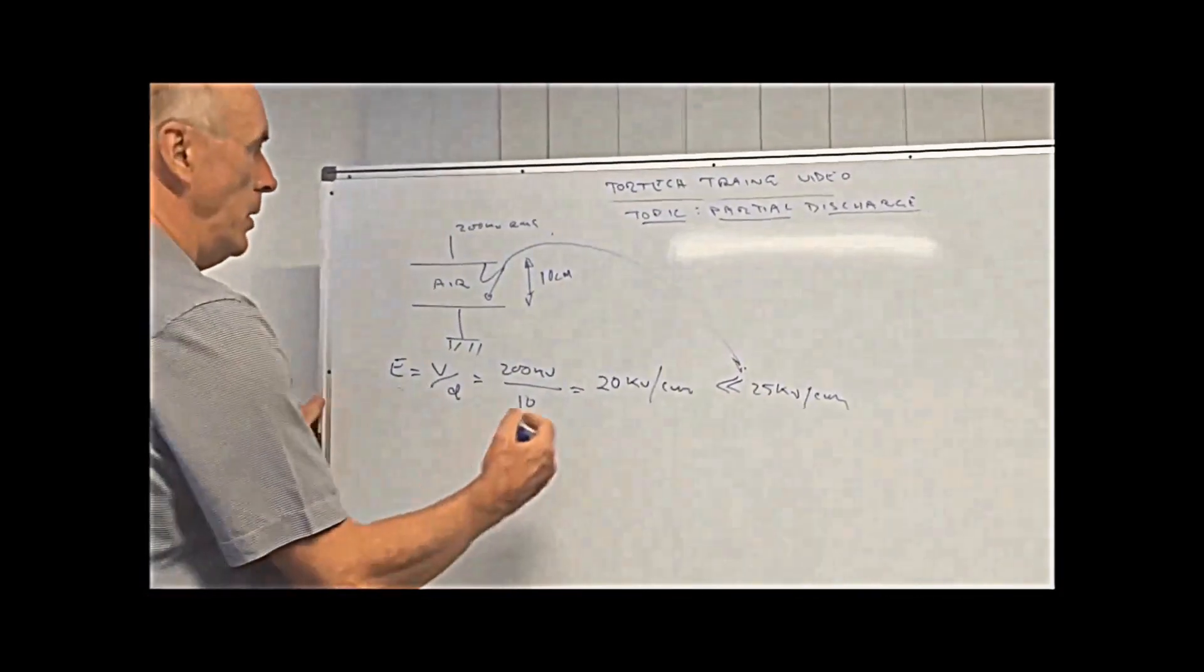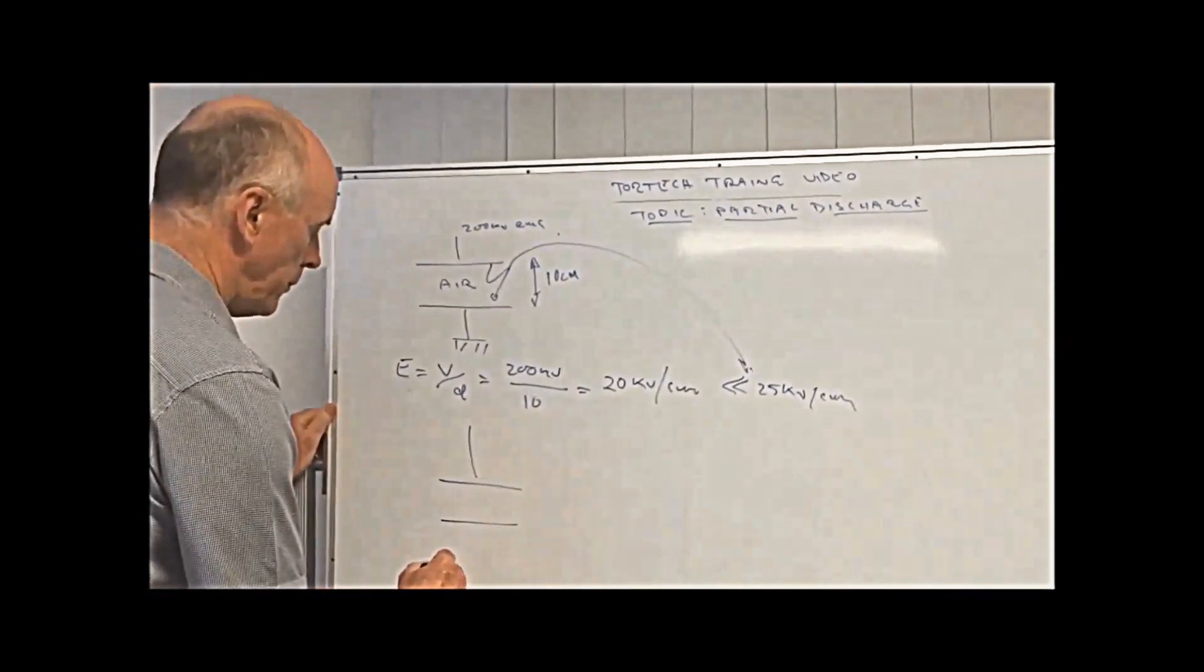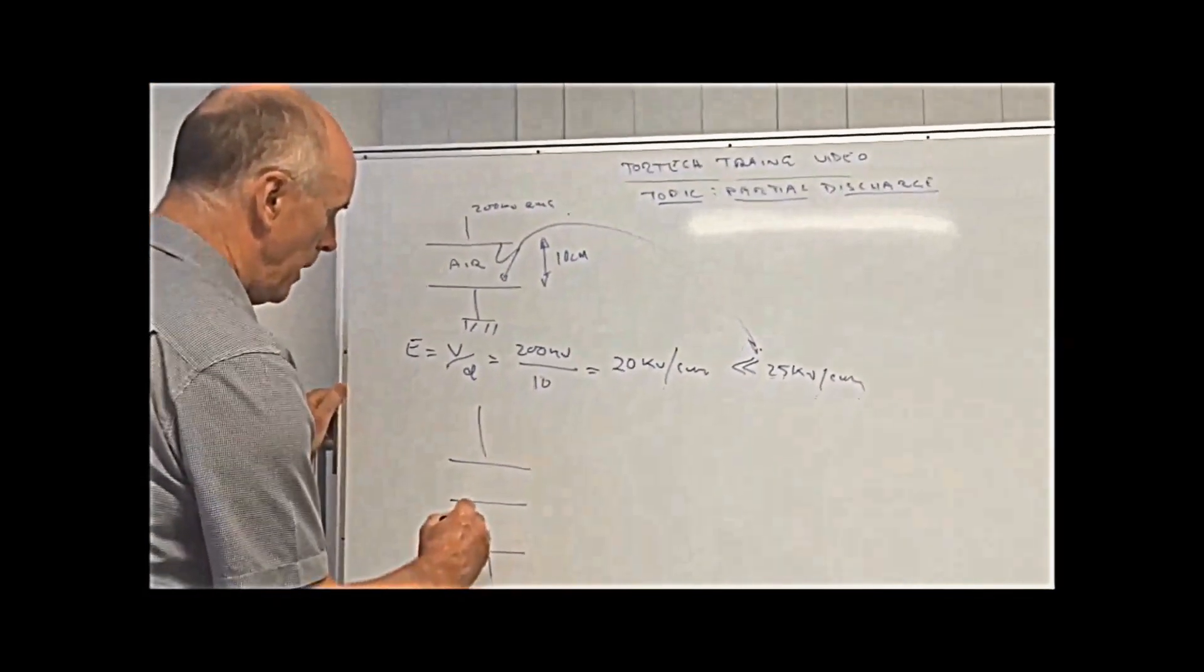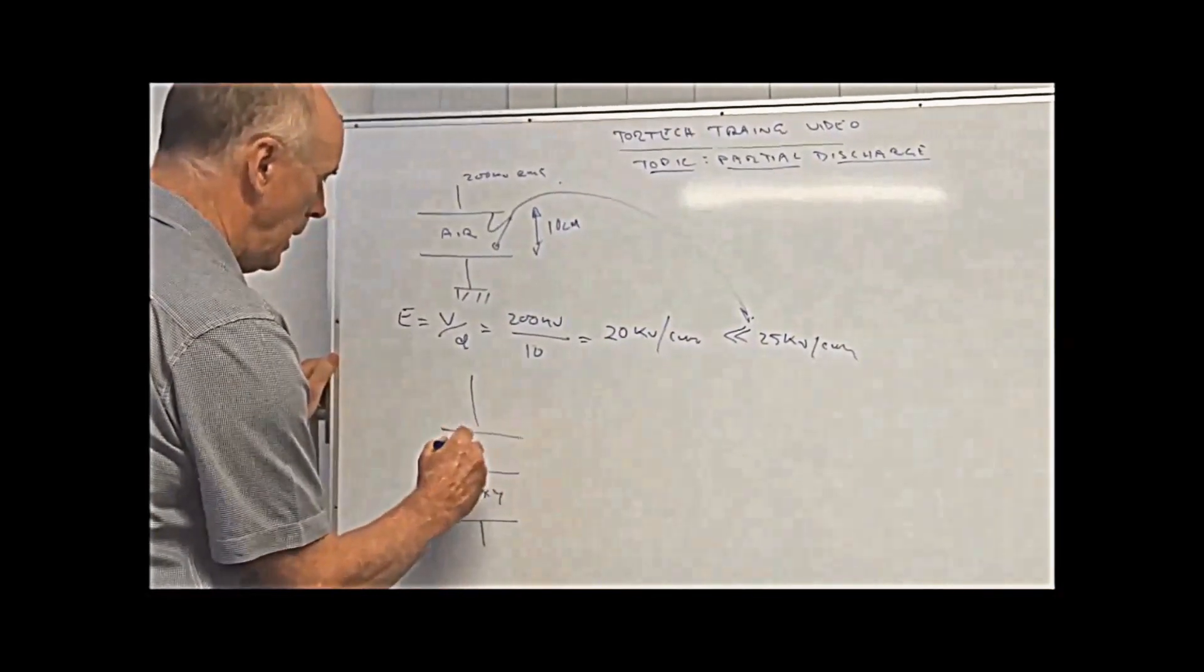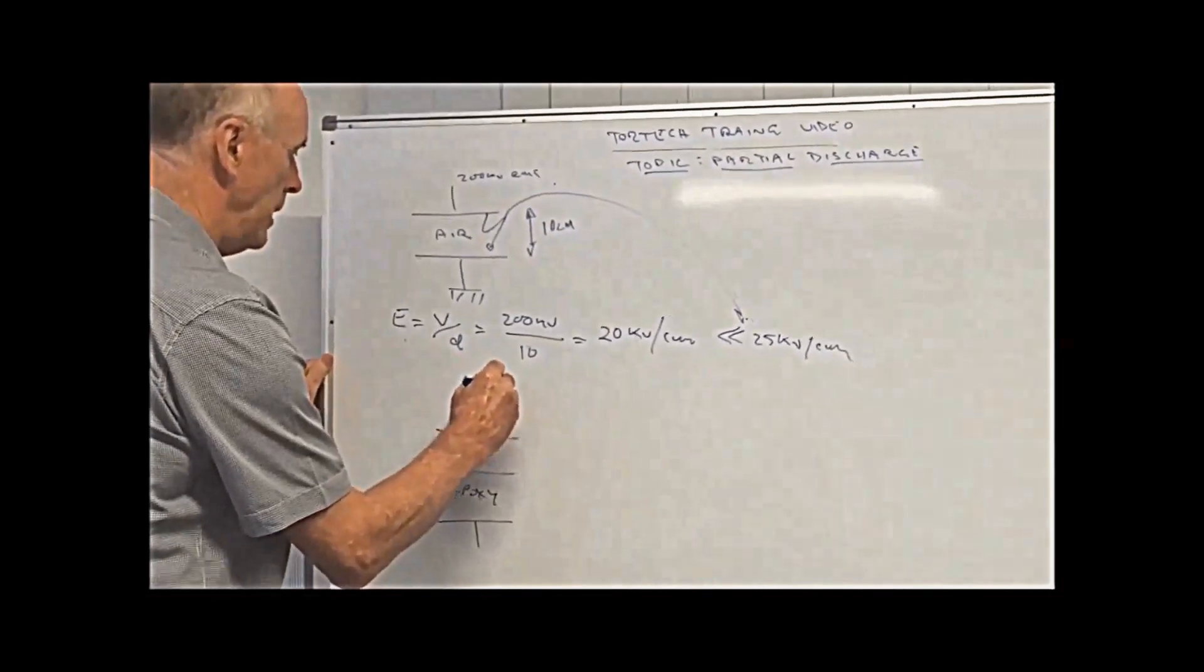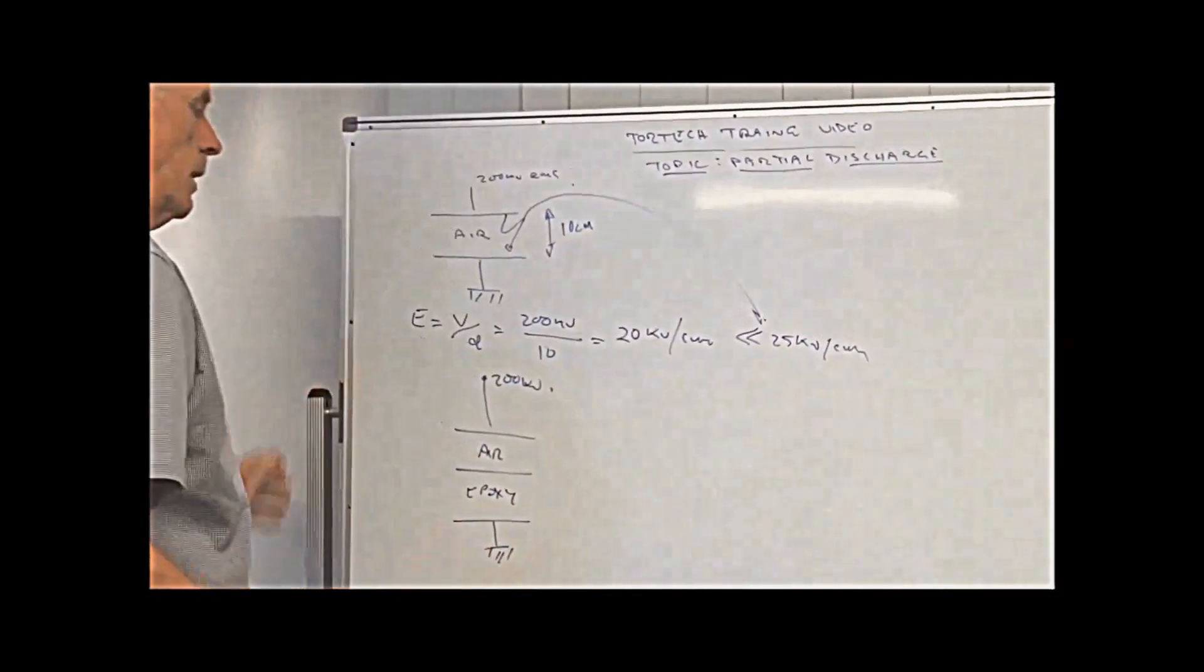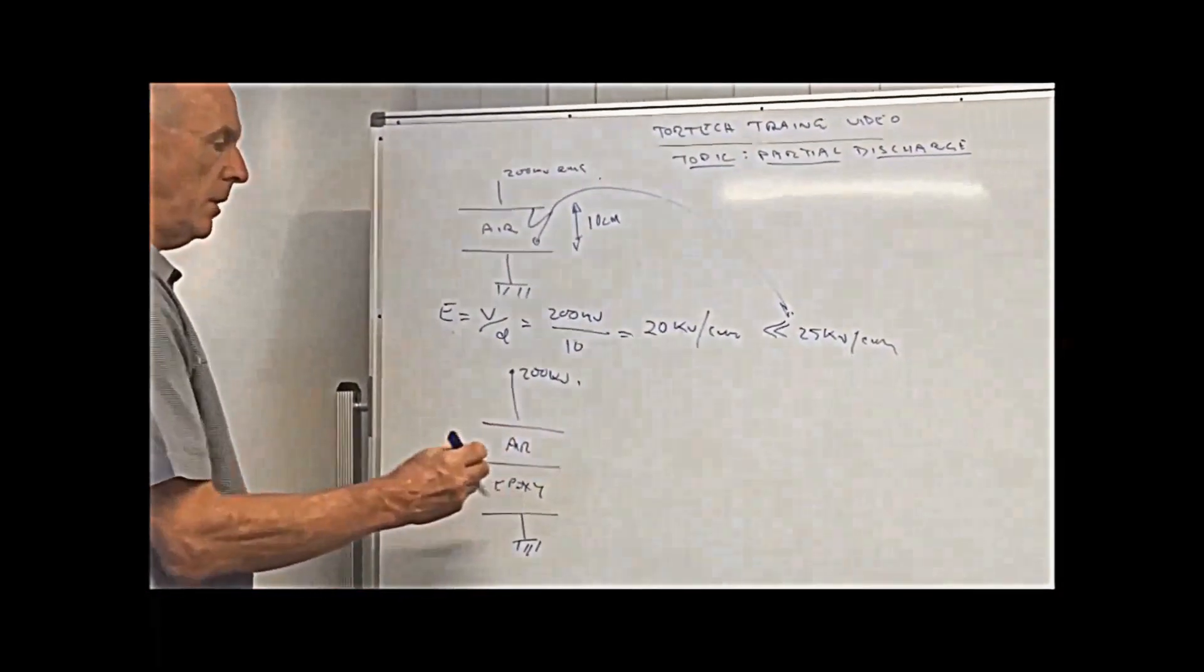So what we do, we've decided that we'll put in epoxy and air. And we'll put 200 kV there, and we'll earth the other end. So we've got two mediums, one is the air insulation and one is epoxy.